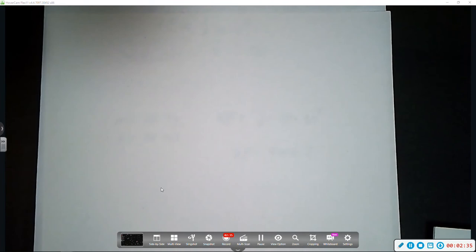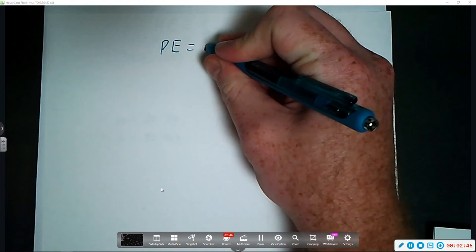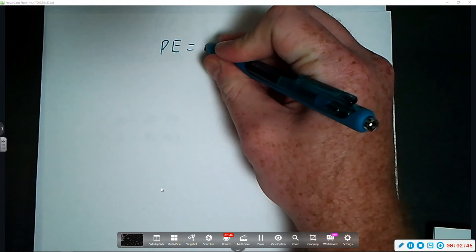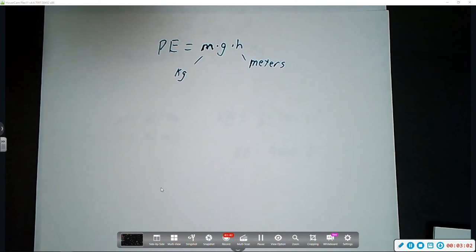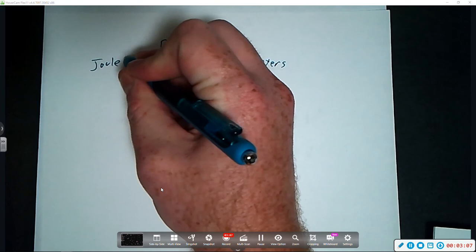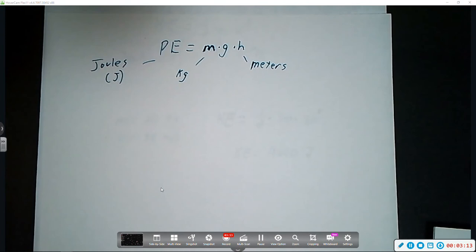The second page of the worksheet is asking you to work with the potential energy equation, which is mass times gravity times height. Now, mass is again measured in kilograms, height is going to be measured in meters, and again, your unit for potential energy is joules, which is abbreviated with a capital J.